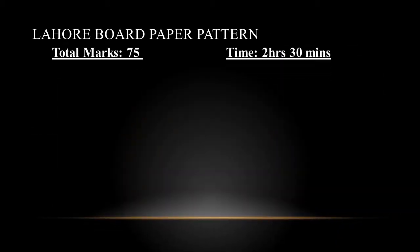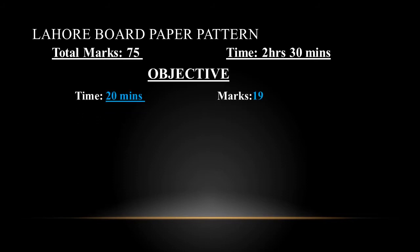Total marks allocated to this paper are 75 with a time duration of 2 hours 30 minutes. The first objective paper is attempted on a bubble sheet, as you have practiced in class 9. It is of 19 marks and the time for objective is 20 minutes.